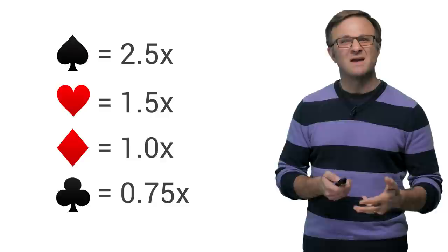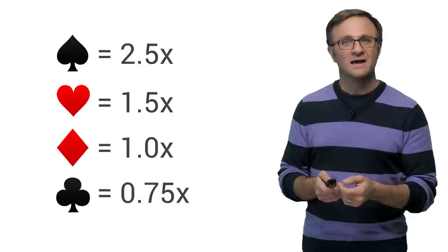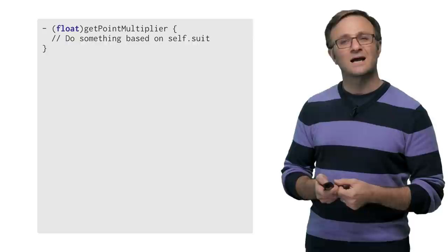And down below, we'll store this as a property. Now, let's say I wanted to write a method to do something based on this suit. Maybe different suits give me different point multipliers in our card game when we get to the scoring section.